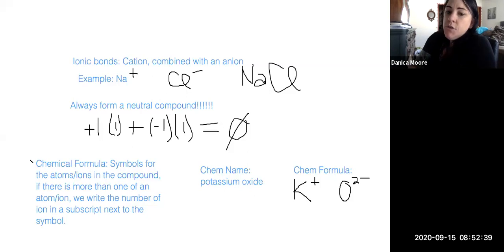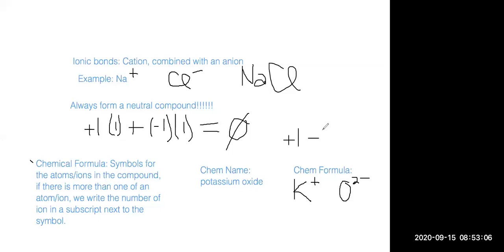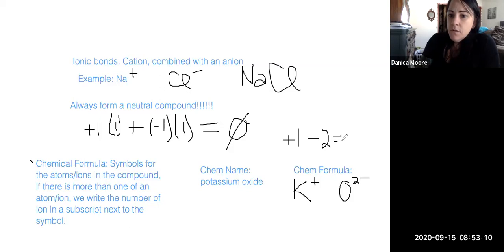So if we want to get a neutral compound, I always start off with one of each ion and see if that gives me a neutral compound. And then I can adjust it from there. So if I start off with one potassium ion and one oxide ion, what's my overall net charge going to be? Negative one. Does that make sense, guys?